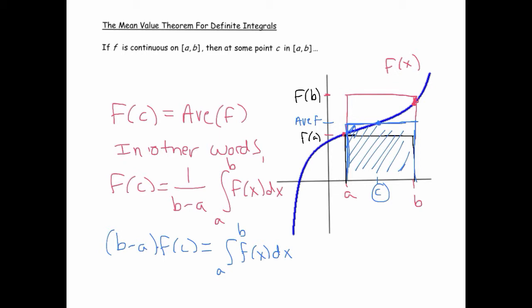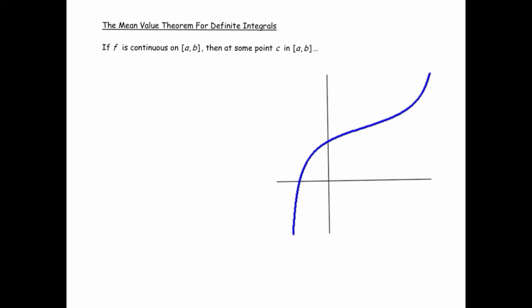This is a very important theorem—it's actually going to be used in the proof of the fundamental theorem of calculus. But for now, just keep in mind that this is an existence theorem, which tells us that even if we don't know where it is, somewhere on that interval there is a c such that f(c) equals the average value. That's the Mean Value Theorem for Definite Integrals.